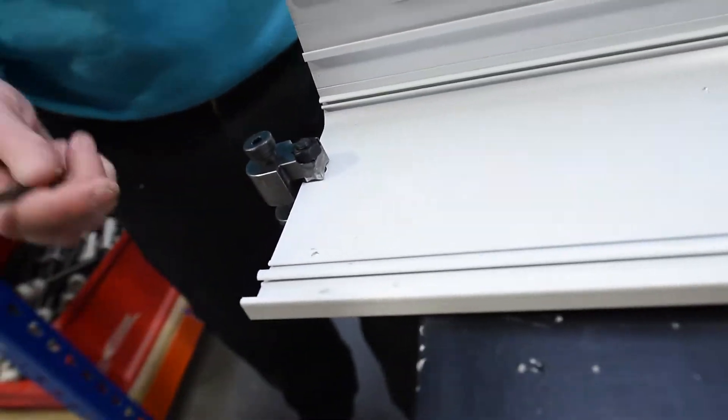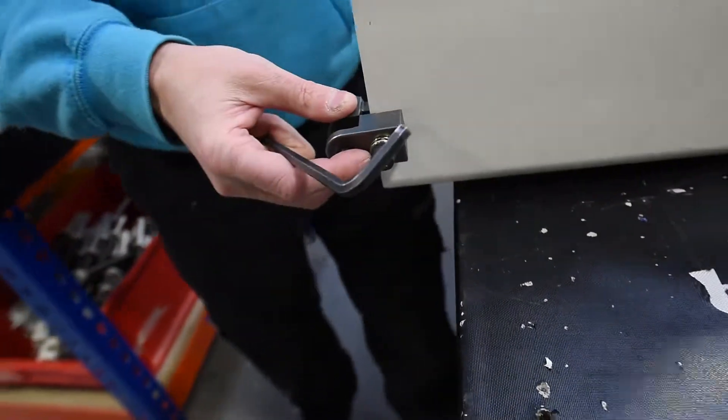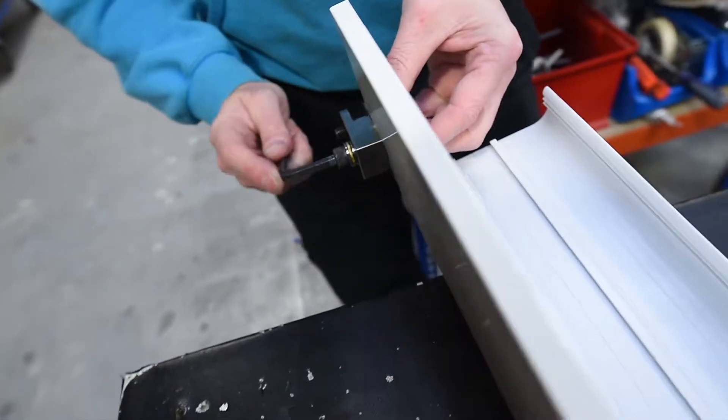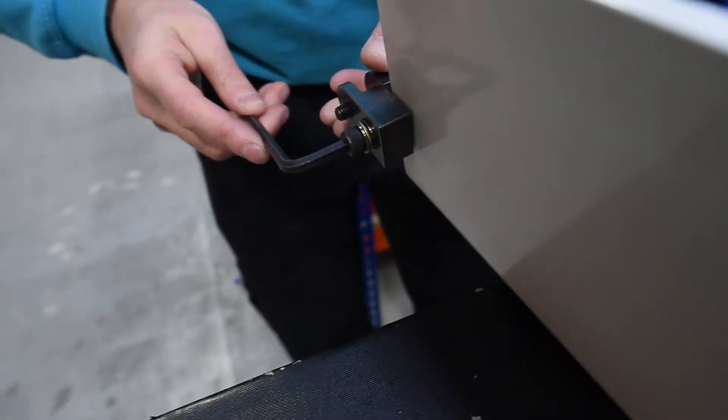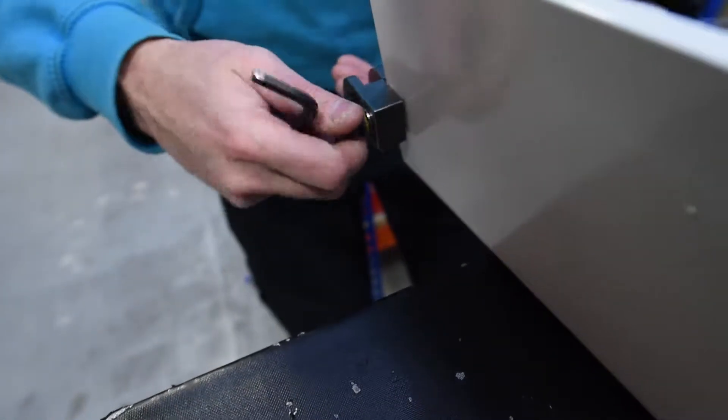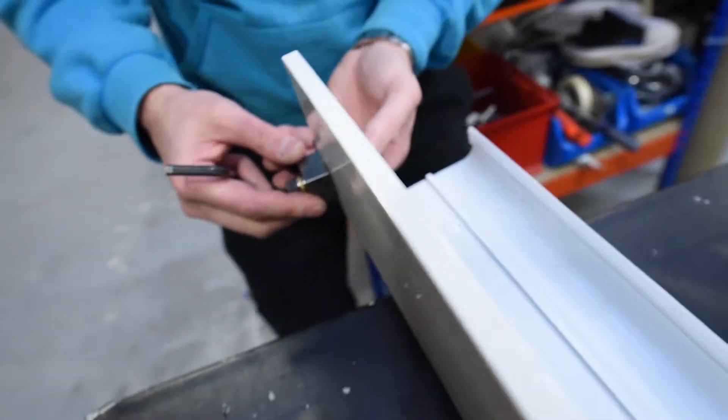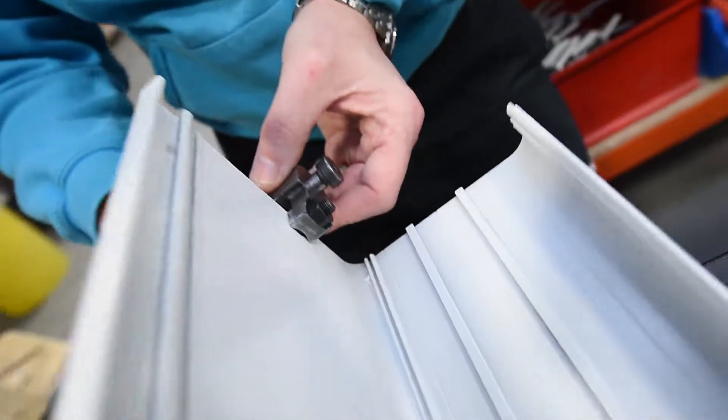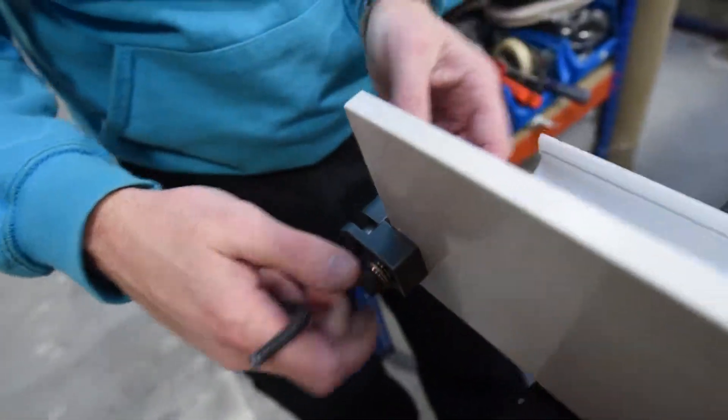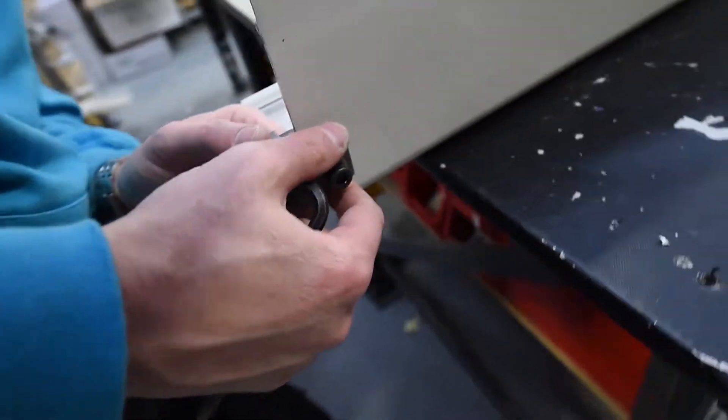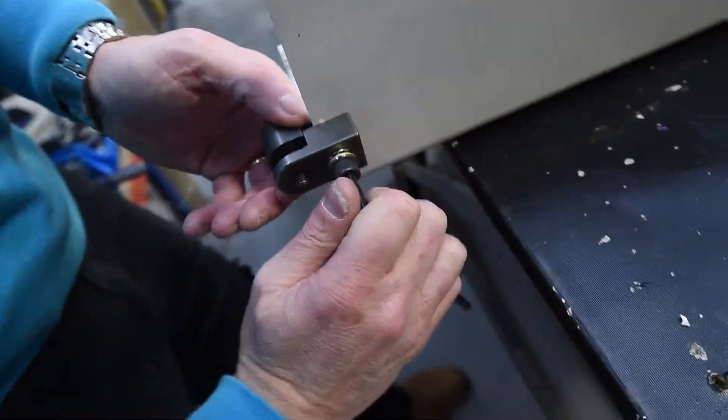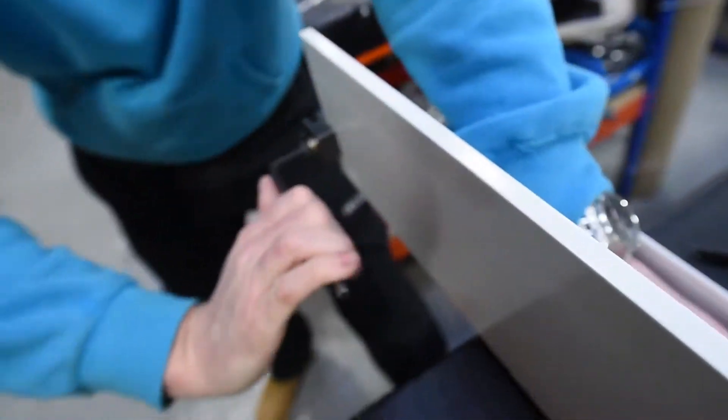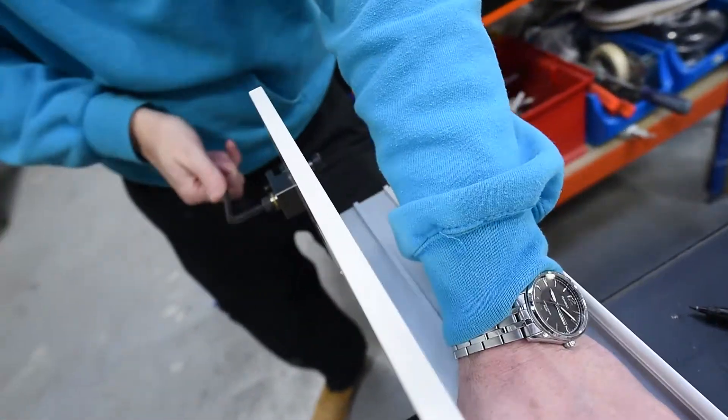Then we're going to take the Allen key. As I'm tightening now, you'll see the clamp come down. Next step, keep turning. Keep turning. And it will eventually bite into the material.